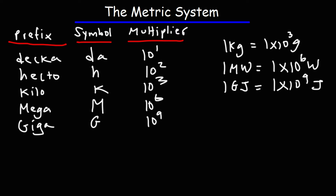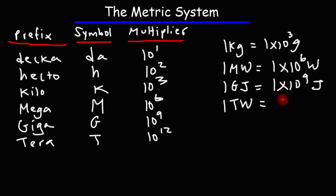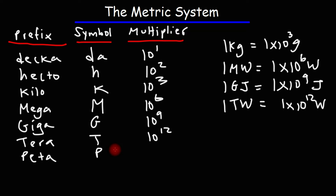After giga, we have tera, capital T. Tera is 10 to the 12, which is equivalent to a trillion. So 1 terawatt is 1 times 10 to the 12 watts. After tera, the next one is peta. In most cases, if you're studying for an exam, you typically need to know up to tera. Going past 10 to the 12, you usually don't need to know these unless your professor provides those notes. Usually up to 10 to the 12 is the limit.